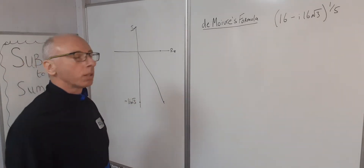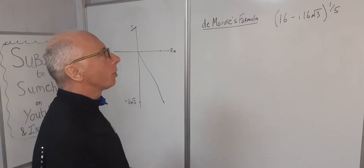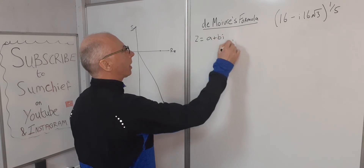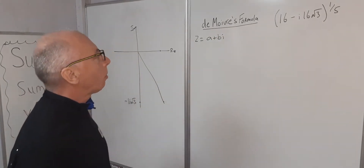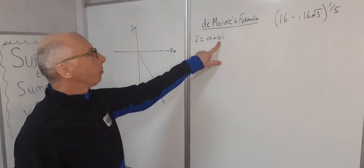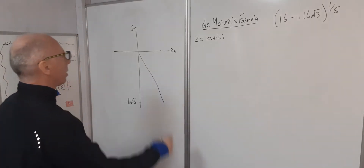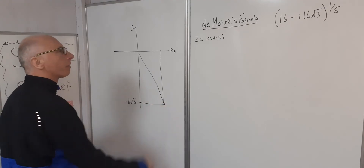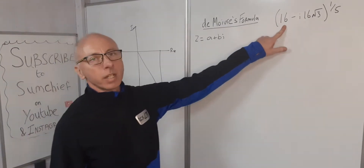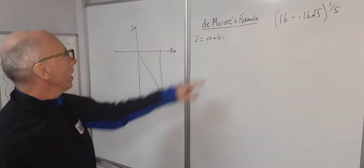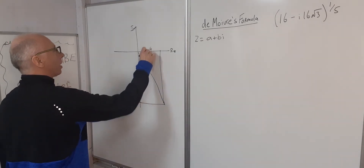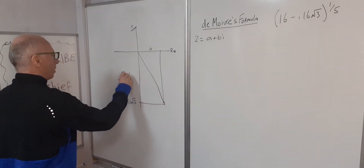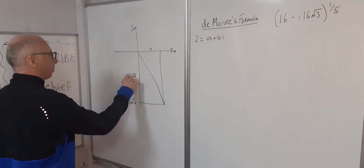Dealing with complex numbers, we need to formulate what it is. So z equals a plus bi, where a is the real part and b is the imaginary part. So 16 is our real part — that's our a — and our imaginary part is 16√3.